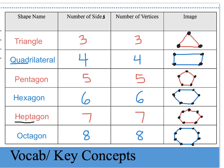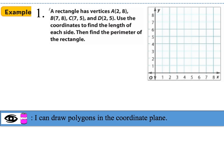Let's use these key concepts for Example 1. A rectangle has vertices: point A (2,8), point B (7,8), point C (7,5), and point D (2,5). Use the coordinates to find the length of each side, then find the perimeter. We graph all four points on the coordinate plane, and our job is to figure out the distance between each vertex.